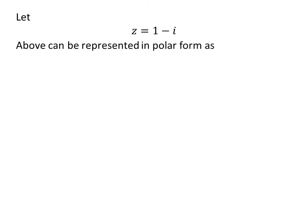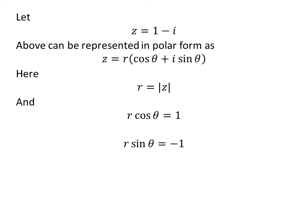Let us assume z is equal to 1 minus i. The complex number z can be represented in polar form as r times cosine of theta plus i times sine of theta. Here, r is equal to the modulus of z, and r times cosine of theta is equal to 1, and r times sine of theta is equal to minus 1.